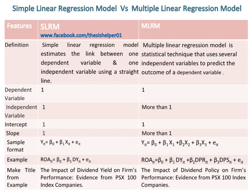The intercept in Simple Linear Regression Model is one, whereas the intercept in Multiple Linear Regression Model is also one. The slope in Simple Linear Regression Model is one, whereas the slope in Multiple Linear Regression Model is more than one.